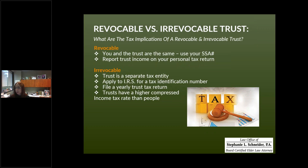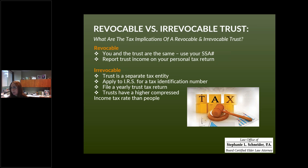Each of these trusts has different tax implications. With the revocable trust, because we're still in control, the IRS looks at us and our trust as being one and the same — we are not treated as separate entities. When you meet with your accountant to do your annual personal income tax return, any income, interest, or dividends that accrue on the trust assets are going to be reported on your Form 1040, whether you're single or married. We do not get a separate tax identification number for your trust — everything is reported under your Social Security number.